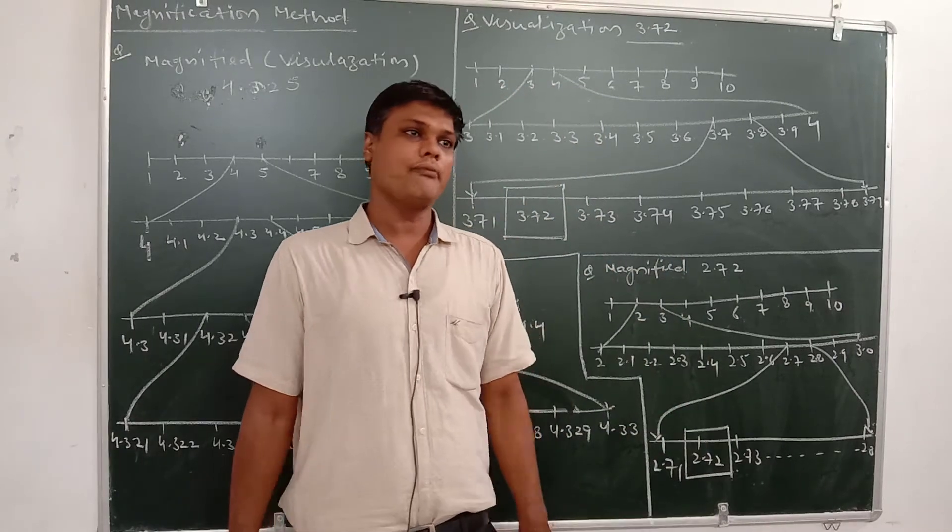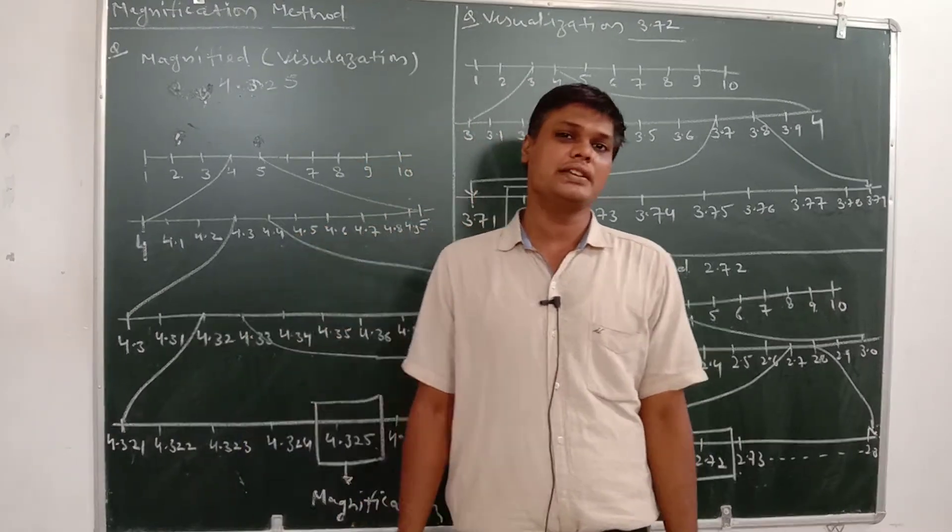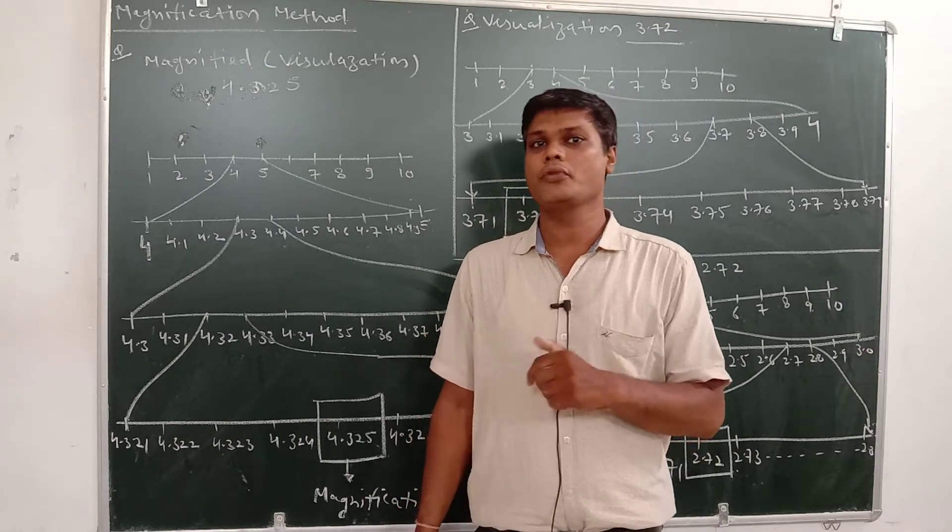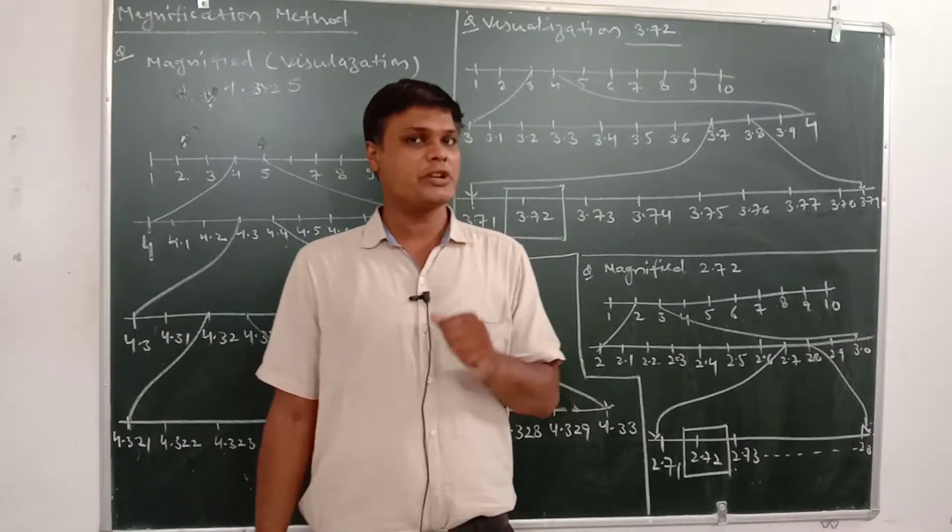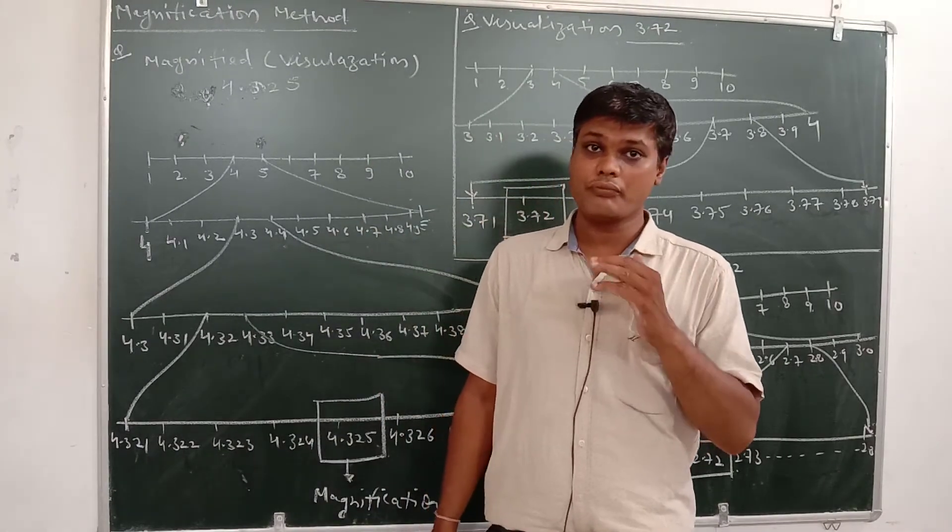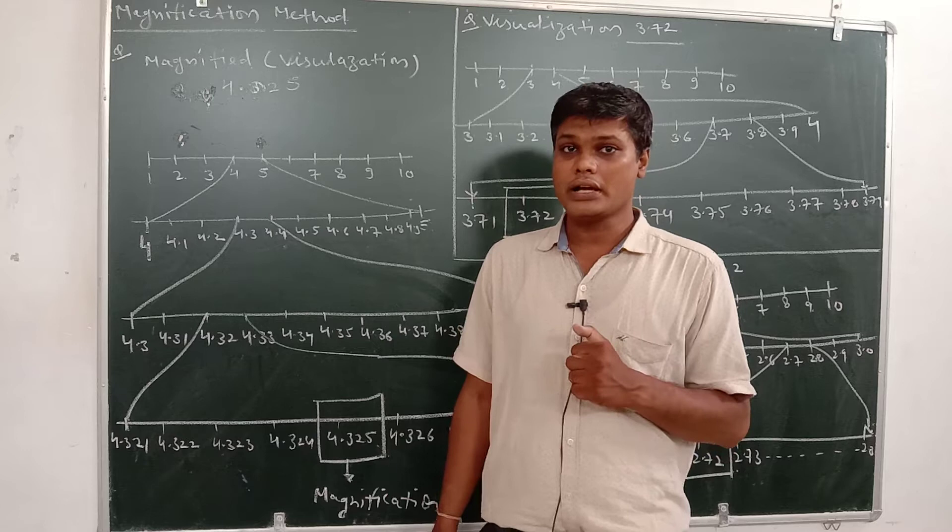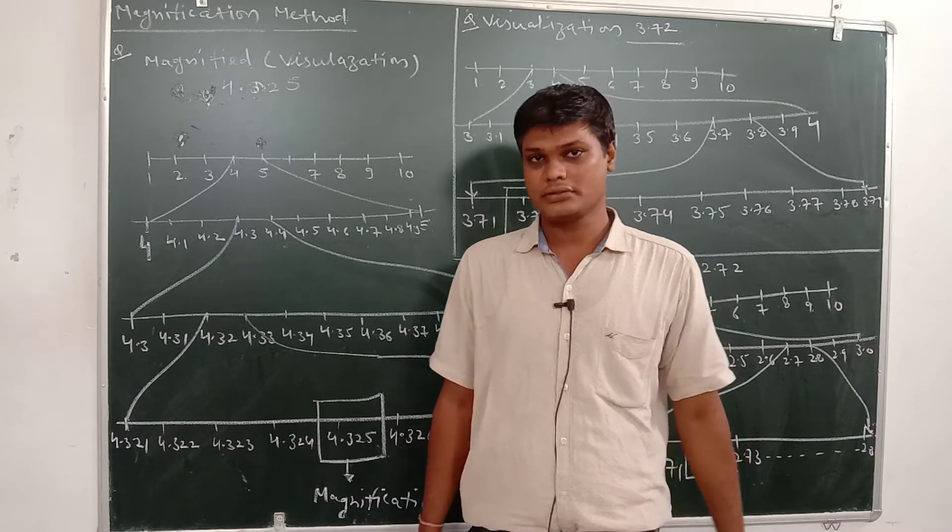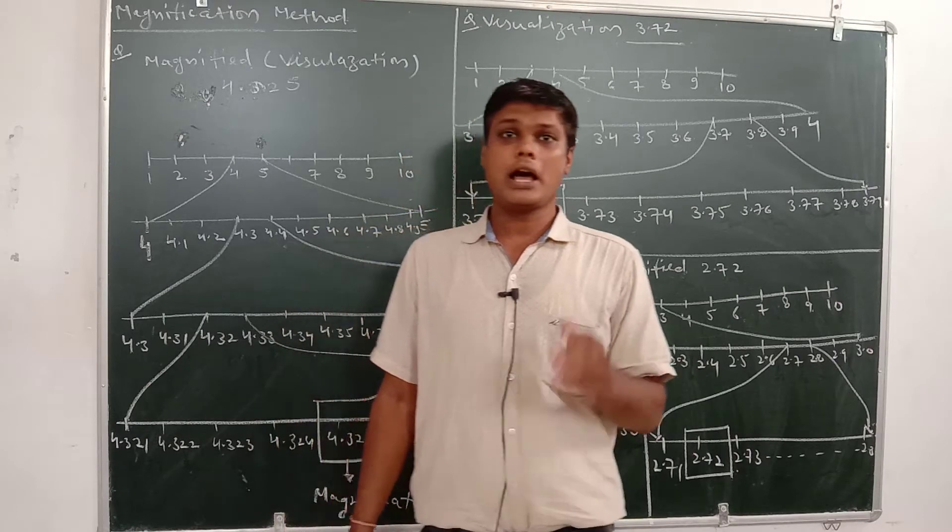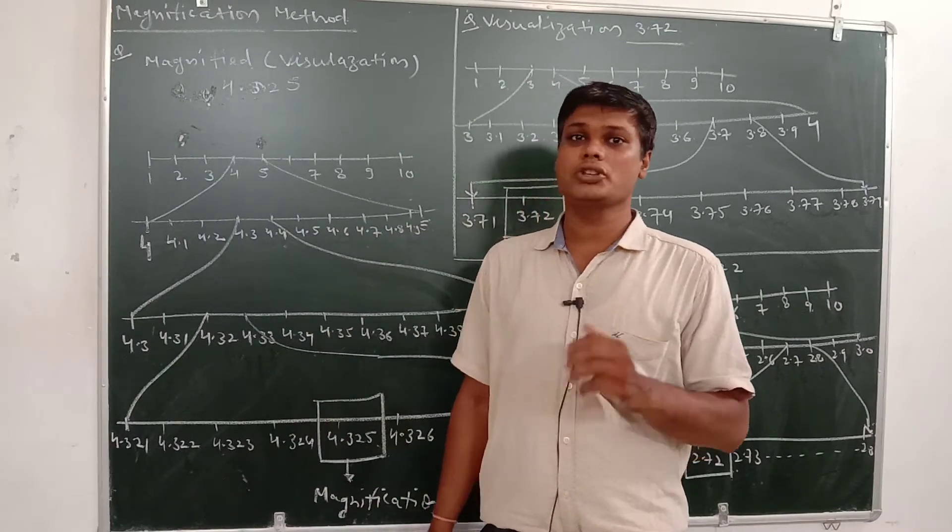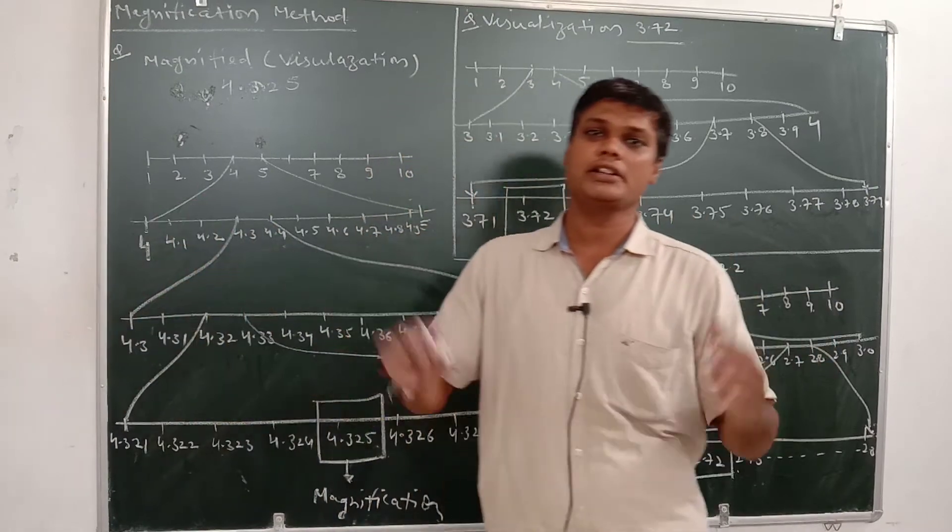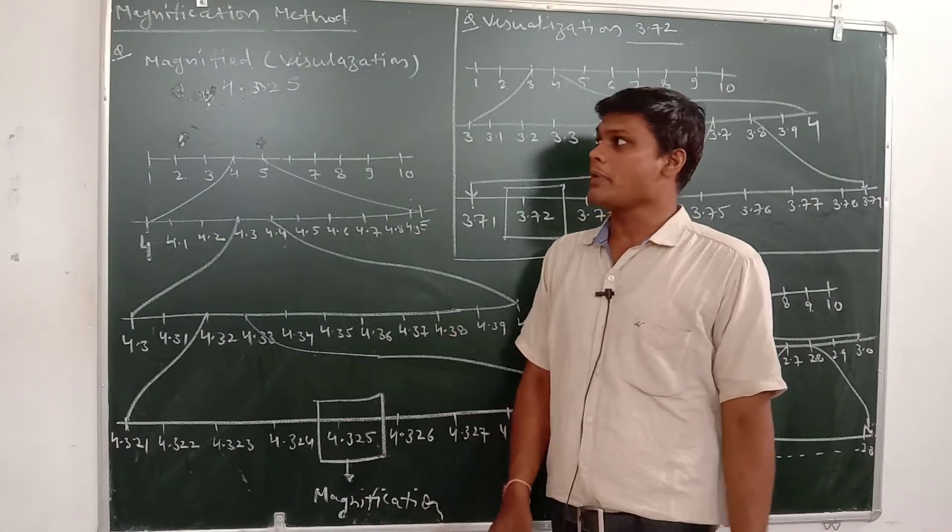For example, I wrote 4 and 5. Now between 4 and 5, how many digits come? Look: 4.1, 4.2, 4.3, 4.4, 4.5, 4.6, 4.7, 4.8, 4.9 - after 4.9 what comes? 5 will come. So these are the intermediate numbers/digits. Now you can also take 4.21, 4.23. So we have to magnify the digits between numbers today.